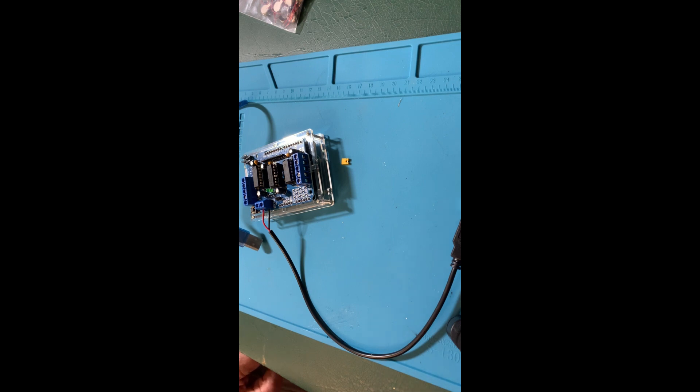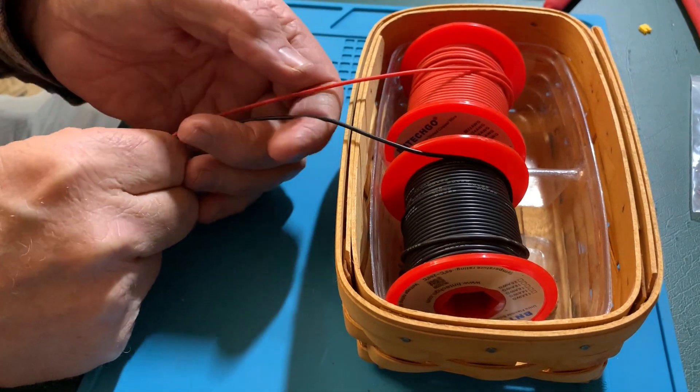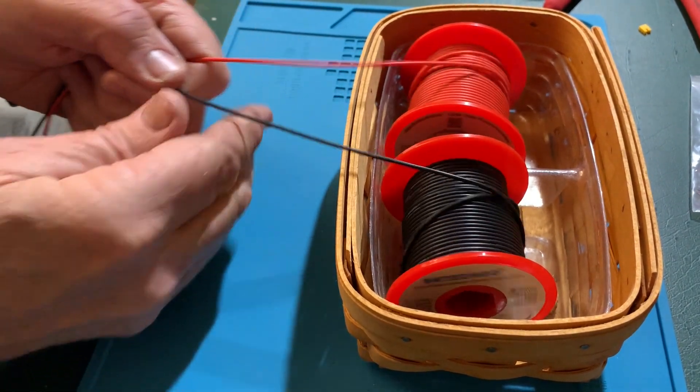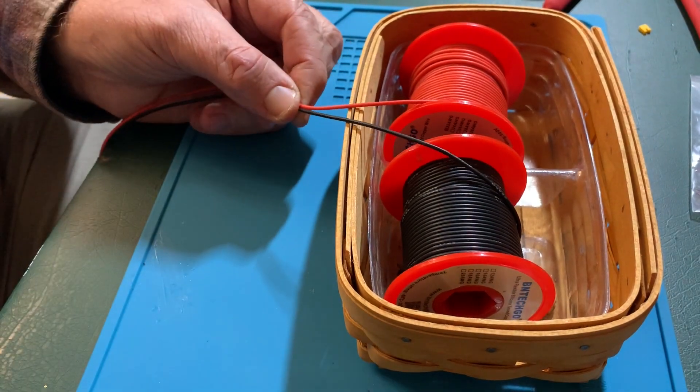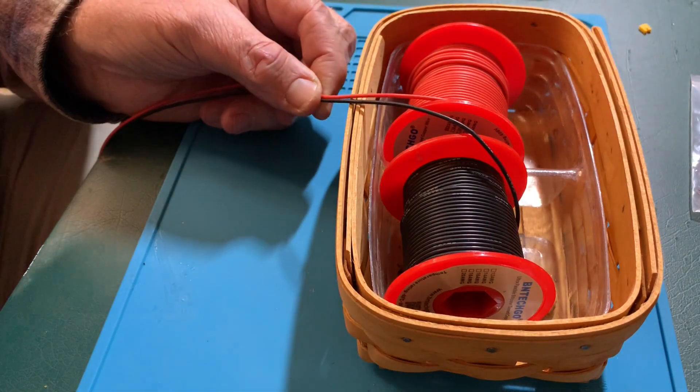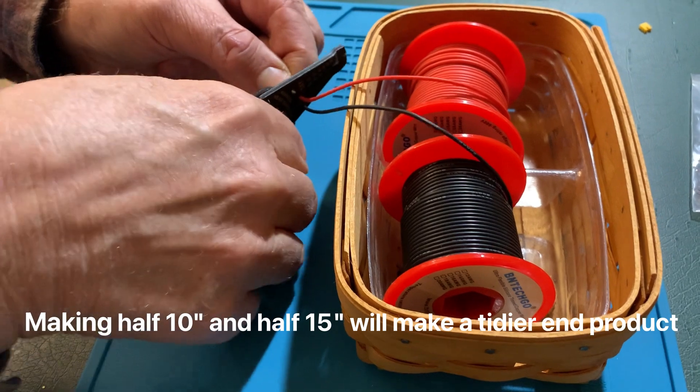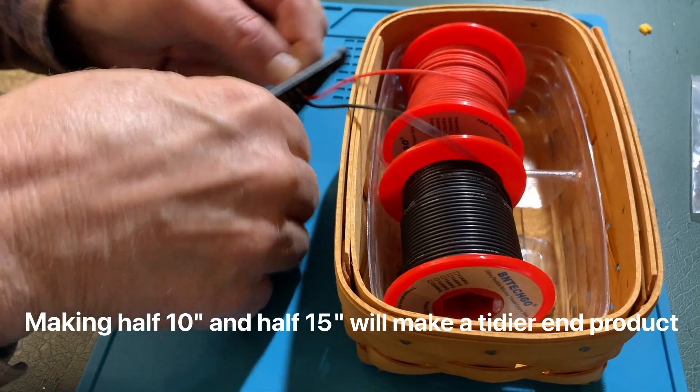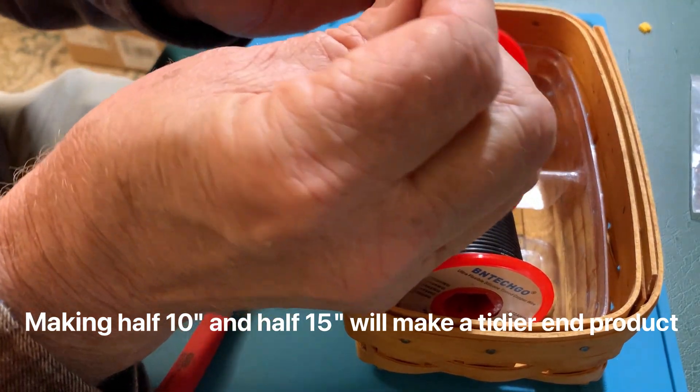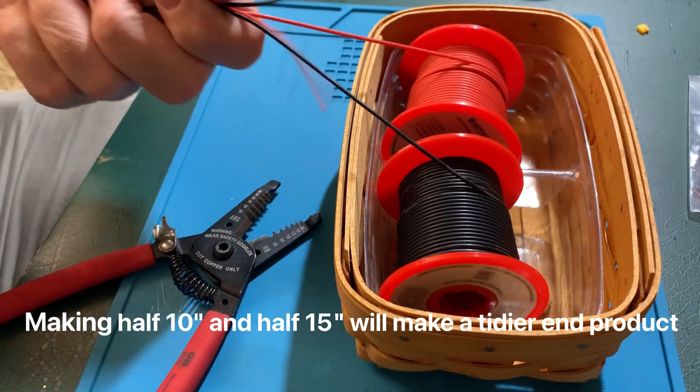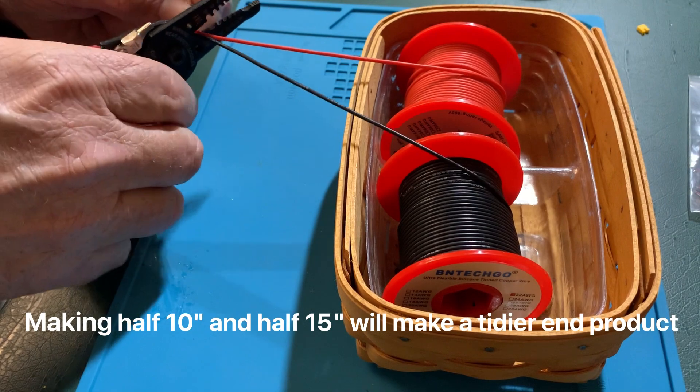We are going to need wires to go from the controller to the motor for the fingers. I make these about 10 inches, somewhere around 25 centimeters. And we are going to need four because each finger is going to be driven individually on a hand.